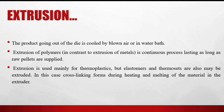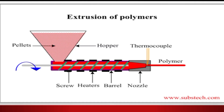Extrusion is also used for the processing of different plastic products. Here is the diagram of extrusion of a polymer: the hopper where we put pellets, the barrel with heating elements where the raw material is heated.